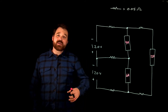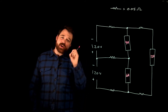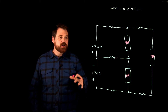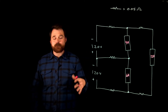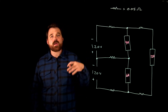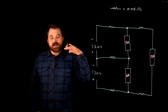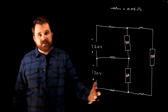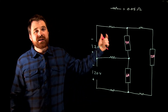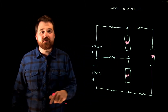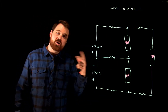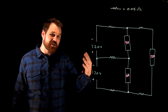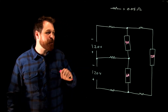The first thing I want to do is apply Kirchhoff's current law to this circuit. Kirchhoff's current law says that all current entering a node must equal the current leaving that node. I've got a link to a video below for Kirchhoff's laws — check that out if you're not sure what I'm talking about.